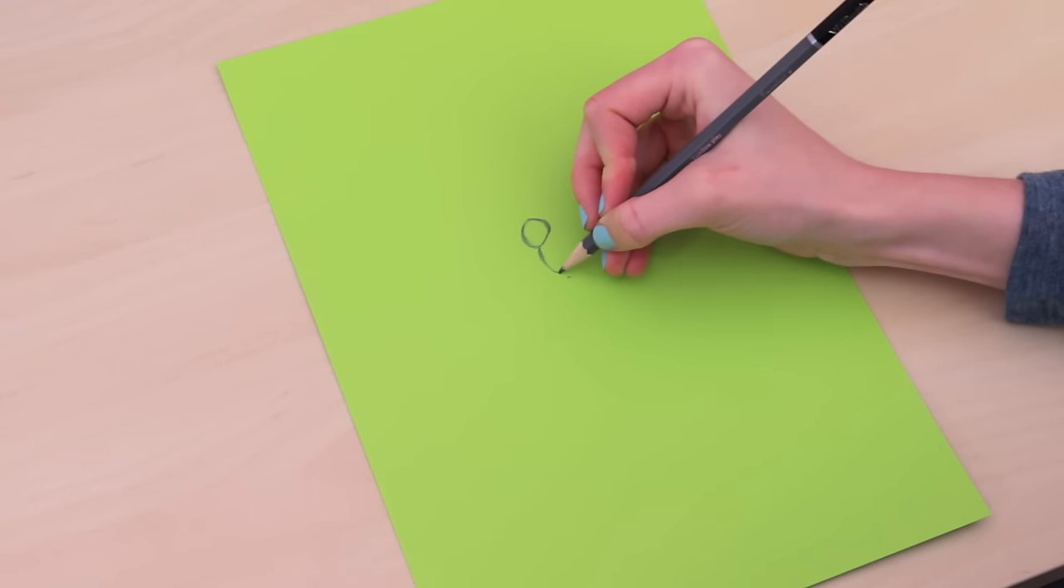Now we take our pencil and our paper. We're making a small circle for her bun. Now we're going to draw a line almost from the bottom, but a bit left. Down, go around, and a little half-circle shape for her ear.